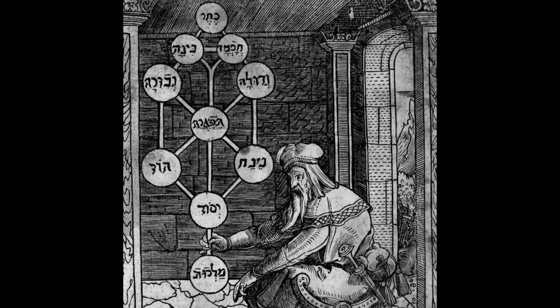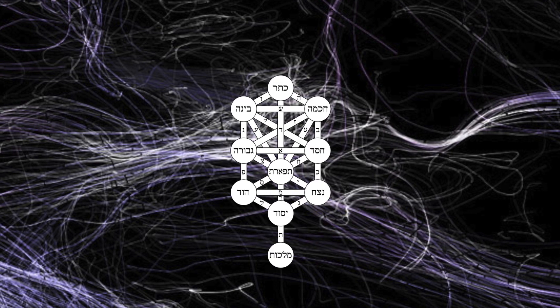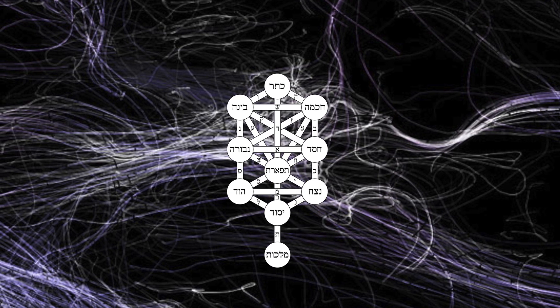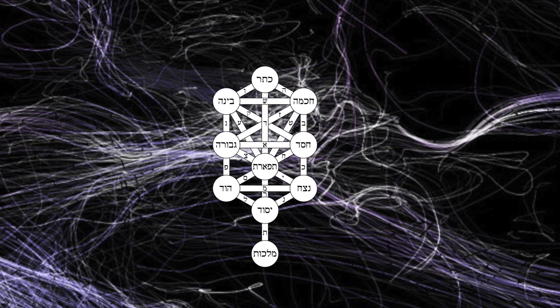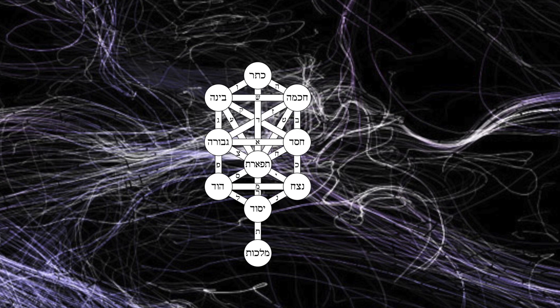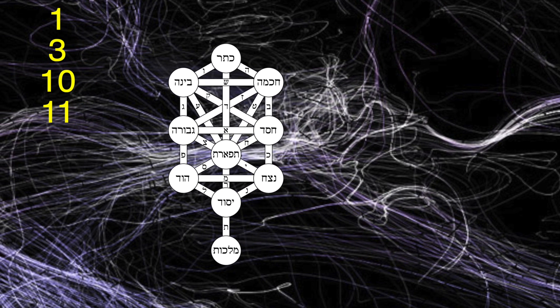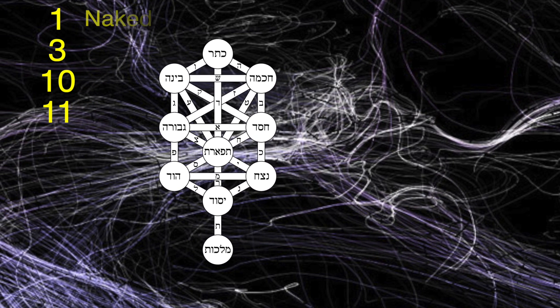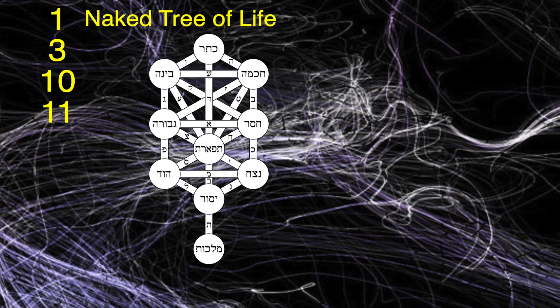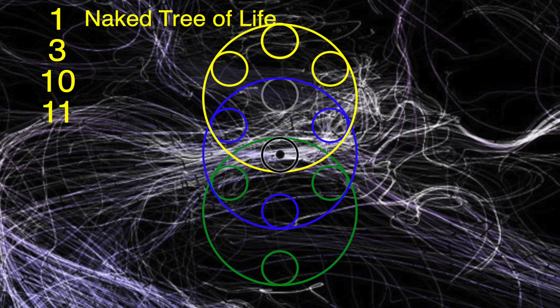I will however attempt to the best of my ability to give a very brief introduction to the symbolism, and then go on to show how the dimensions of reality can be shown as a fundamental part of this system. It's the numbers 1, 3, 10 and 11 that I really want to focus on today, and I'm going to focus on those numbers by borrowing something from the Kabbalah and calling it a naked tree of life.